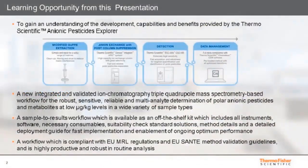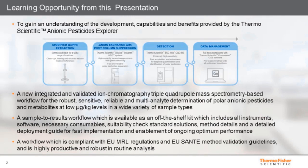We want to take this opportunity to discuss the development, the capability and the benefits of the new products — the Thermo Scientific Anionic Pesticide Explorer. This is a new sample-to-result analytical workflow composed of four modules: an extraction module based on the European Reference Lab quick polar pesticide extraction method with solid phase extraction cleanup, followed by high-performance ion chromatography separation, a triple-quadrupole mass spectrometer detection module, and a ChromeLion chromatography data system module.